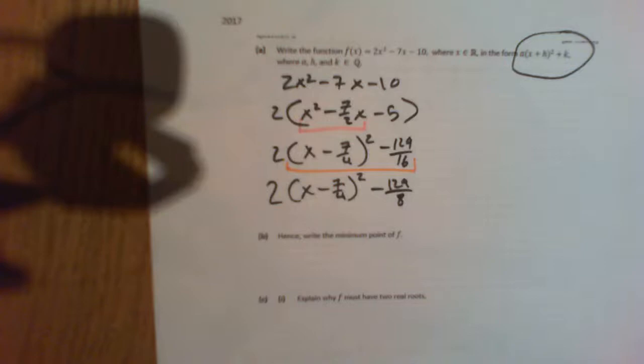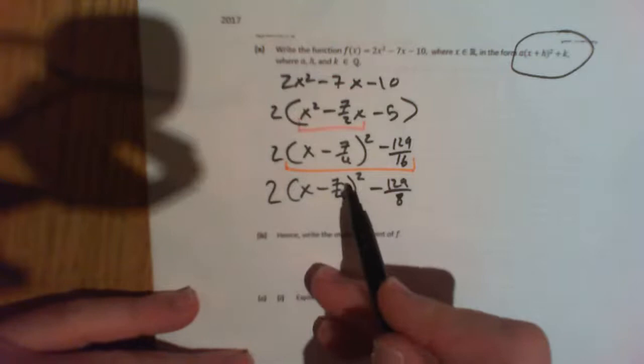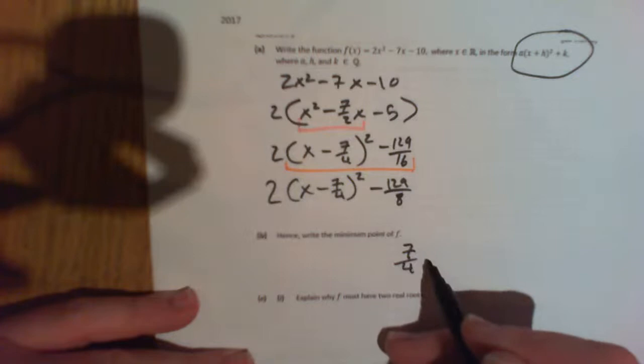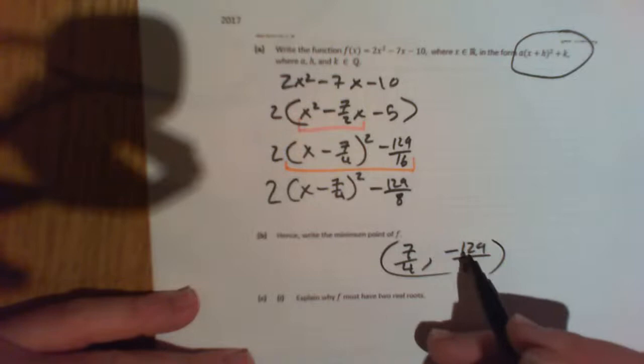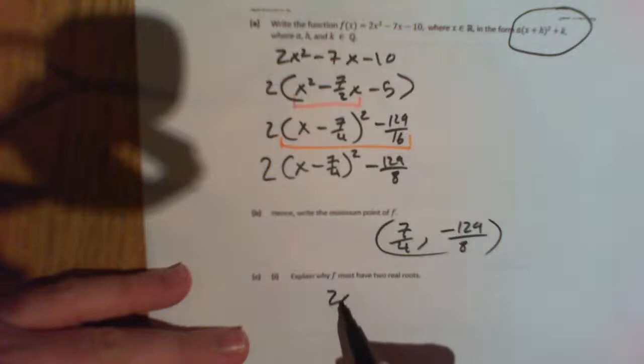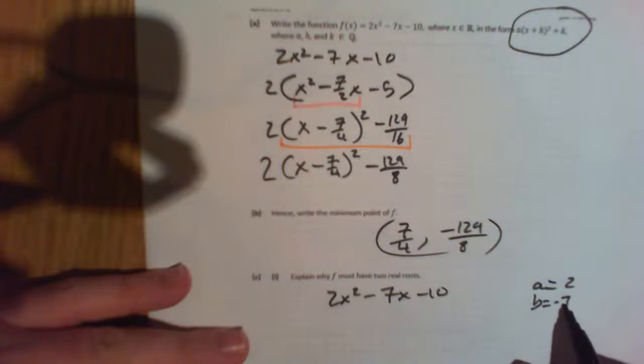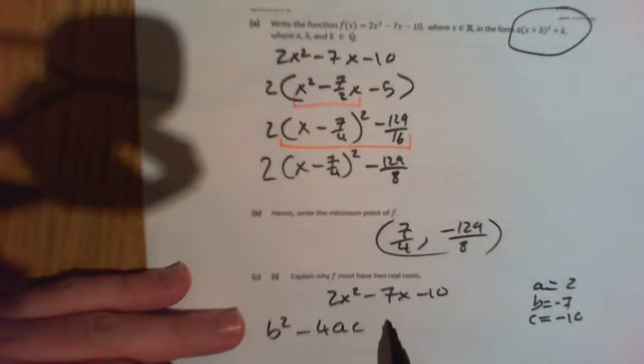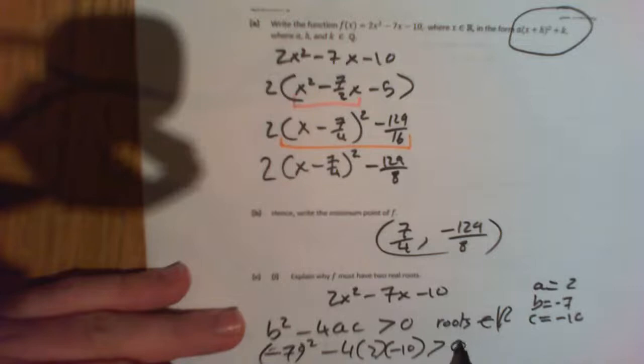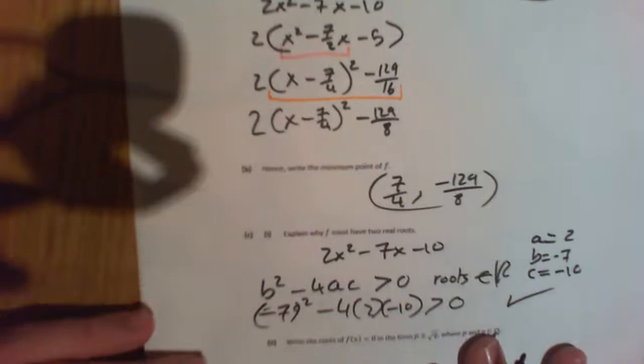Okay? So find the minimum point. It's the opposite of what's inside here with what's outside here. There's your minimum point, gosh. Okay? Explain why it must have two real roots. Well, go back to your original equation. 2x squared minus 7x minus 10. a is 2, b is minus 7, and c is minus 10. So if b squared minus 4ac is greater than 0, the roots are real. The elements of the real numbers. So let's check that. b squared minus 7 squared minus 4 times 2 by minus 10 greater than 0. That is true. It is true. That's positive and that's positive. So two positives add together is going to give you a positive. Now the last bit.